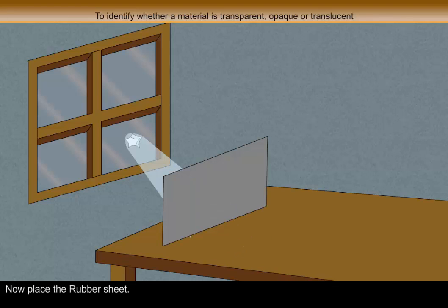Now place the rubber sheet. No, light does not pass through it. So the material is opaque.